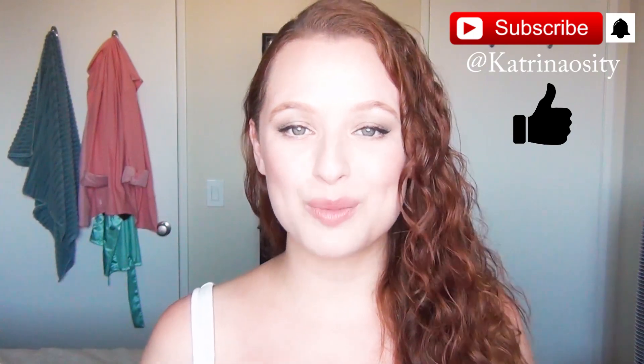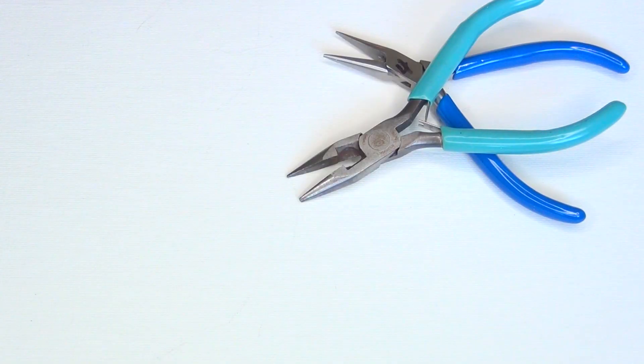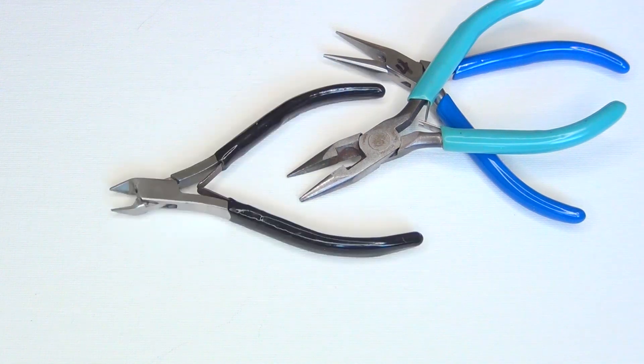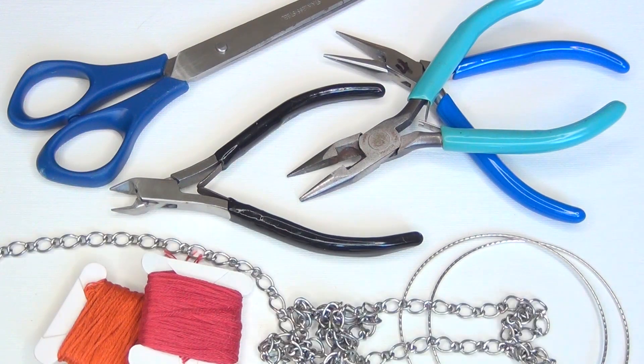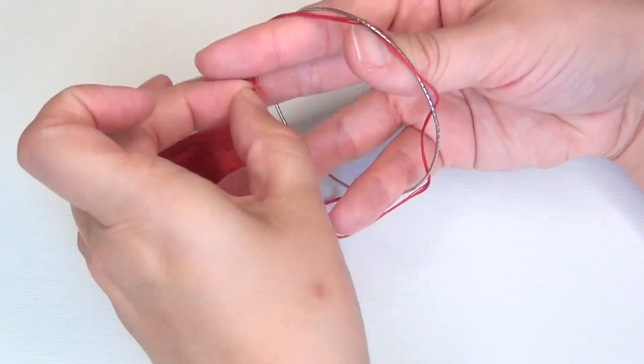And if you enjoyed this video please click the like button, it really helps my videos get seen. For this project you'll need jewelry pliers, a second pair is helpful, wire cutters, scissors, two bangles, two colors of embroidery thread and some chain.